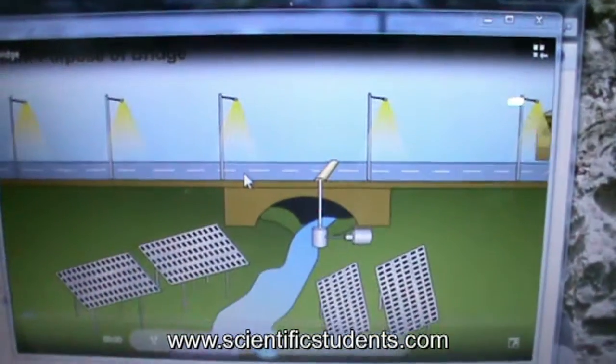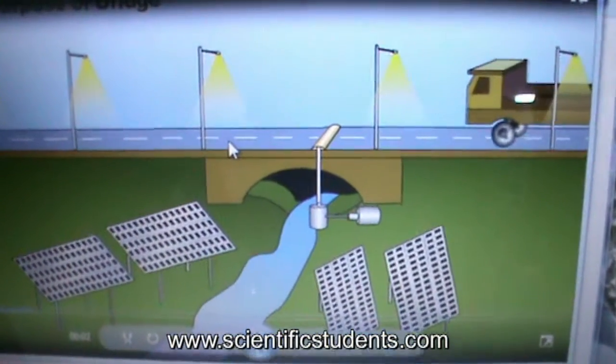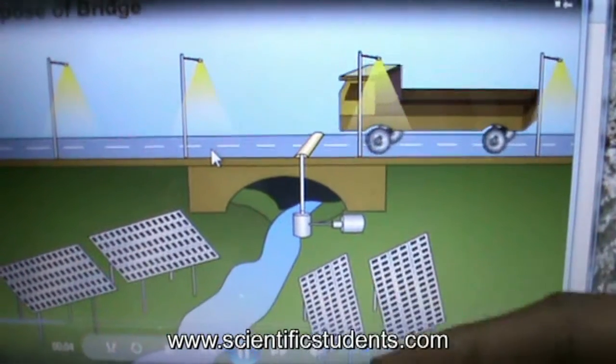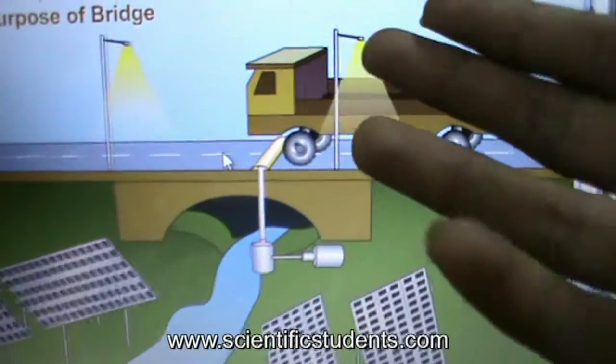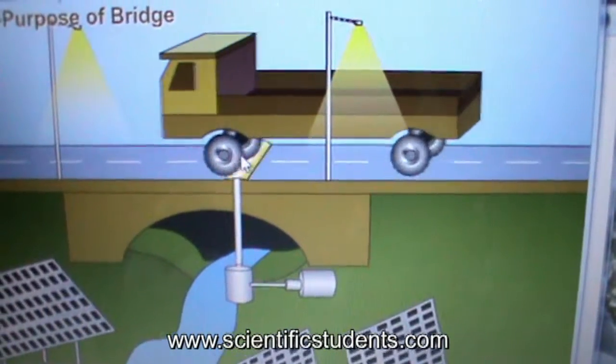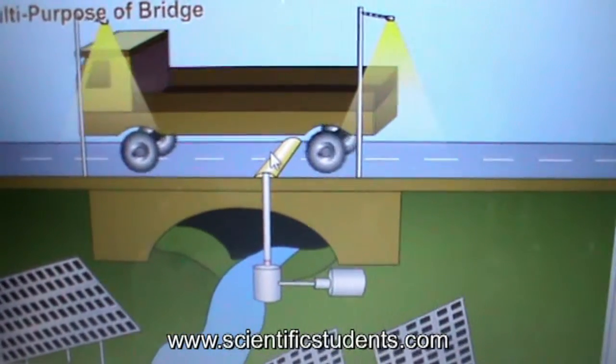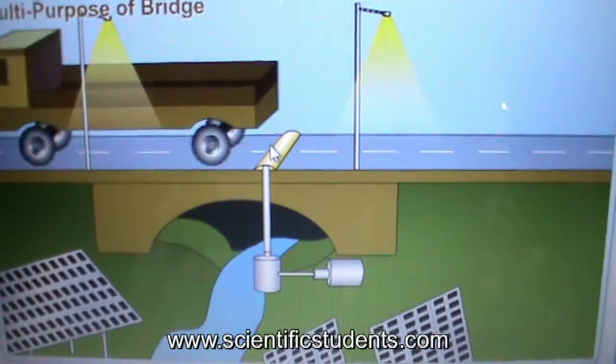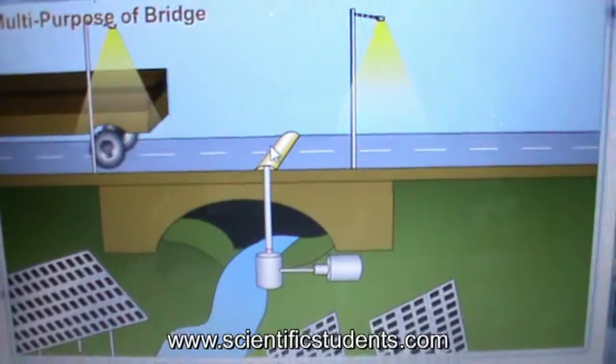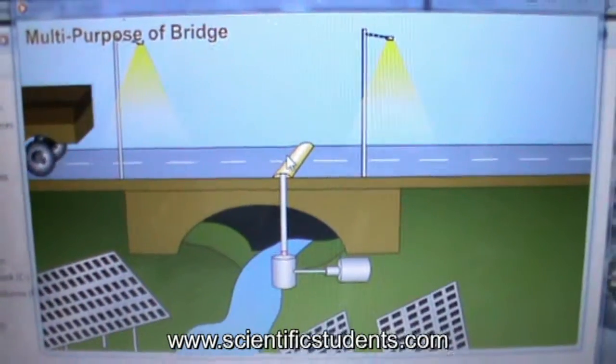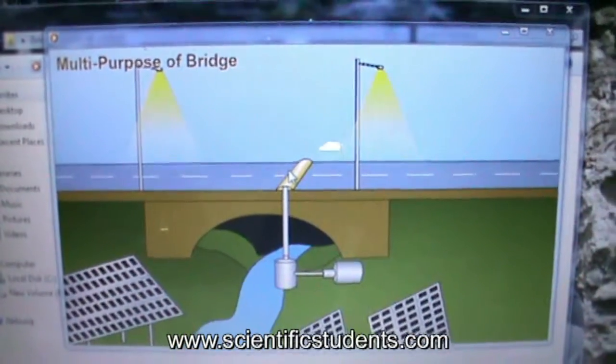And the multipurpose bridge. Here is the dynamo which rotates and converts the energy, which is necessary for the lights, street lights on the road, and even for the fuel systems and the houses nearby. You can arrange it for the turbines and anything, solar panels if you want.